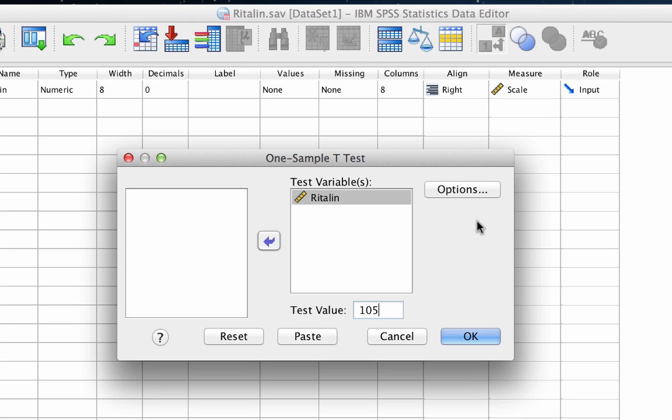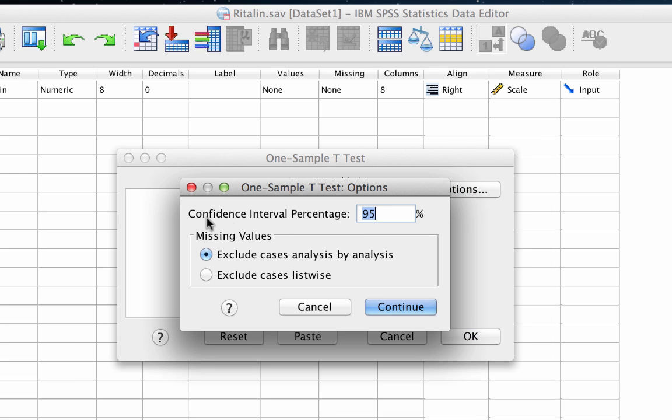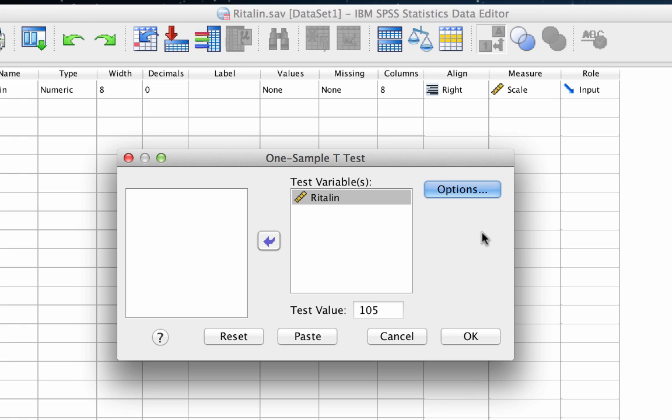Next, we need to tweak our confidence intervals. So click on Options. By default, SPSS uses a 95% confidence interval with a two-tailed test. With our one-tailed test, however, we need to set the confidence interval to 90%, which puts the entire 5% of our alpha equals 0.05 into each tail of the test. Now click OK.